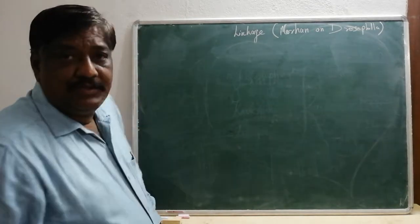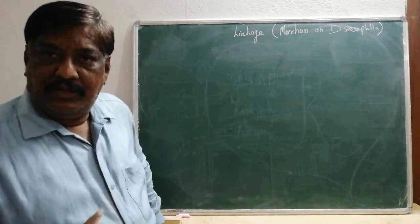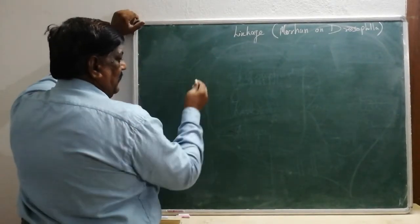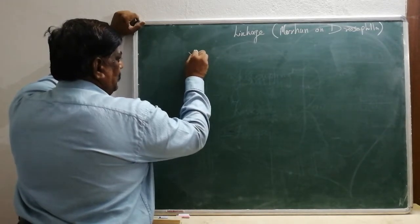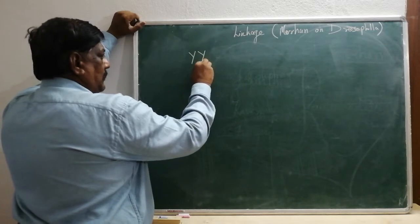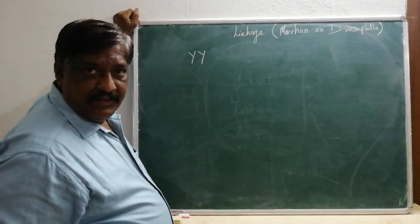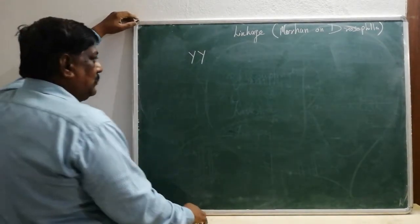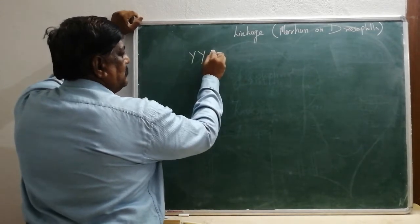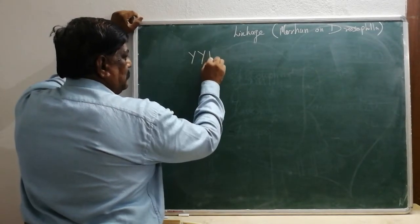Now I am going to take an example from the book. Morgan did the experiment on Drosophila — the fruit fly. He used yellow-colored Drosophila with red eye, using the gene symbol W for red eye.